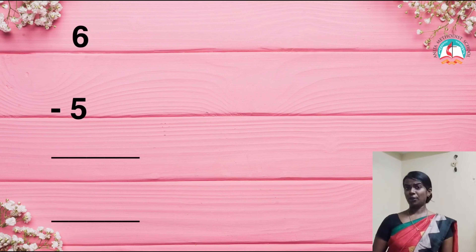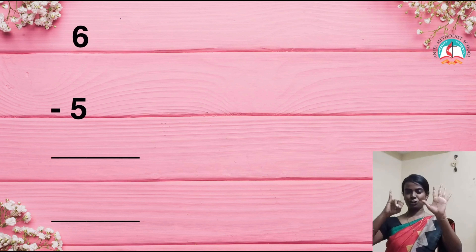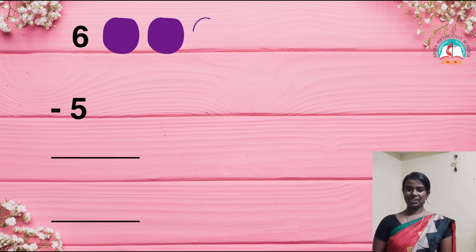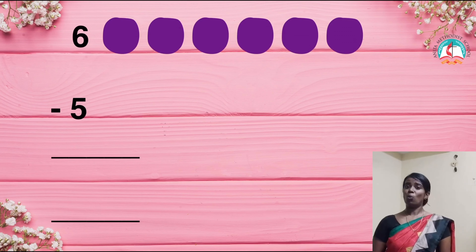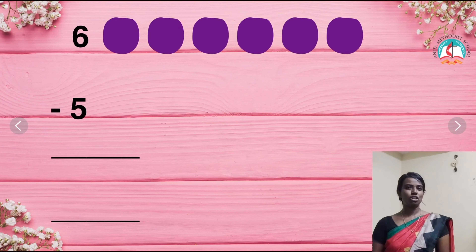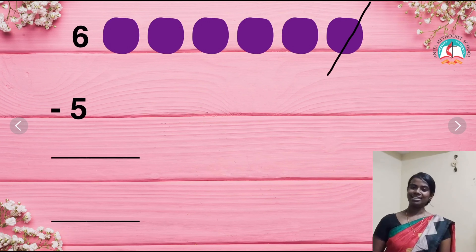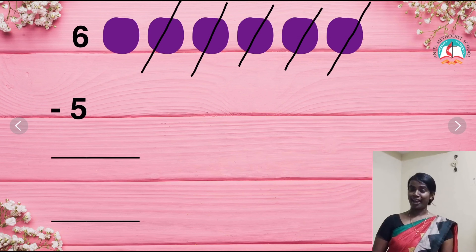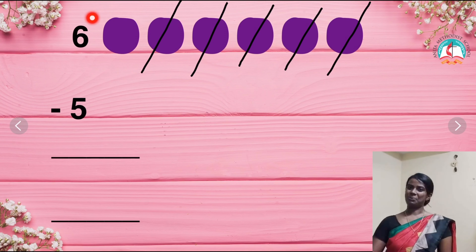The next one. We are going to subtract the numbers using beads. So what are the numbers? We have 6 and 5. Now I am going to draw beads for the number 6: 1, 2, 3, 4, 5, 6. We should not draw beads for the second number, only for the first number. What is the second number? The number is 5. So I am going to strike out 5 beads: 1, 2, 3, 4 and 5. How many are left? Only 1. So I am going to write the number 1.